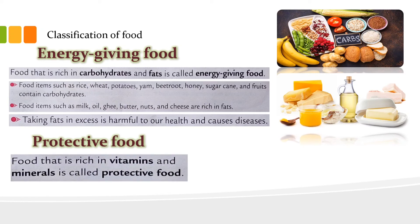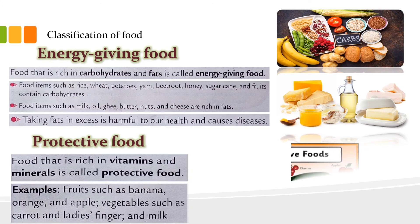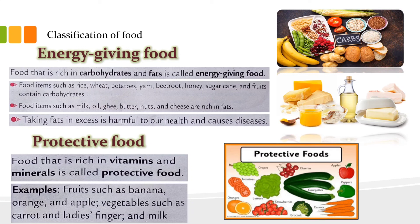Next is protective food. Foods that are rich in vitamins and minerals are called protective food. Examples include fruits such as banana, orange, and apple; vegetables such as carrot and lady's finger; and milk. Protective foods protect our body from diseases.